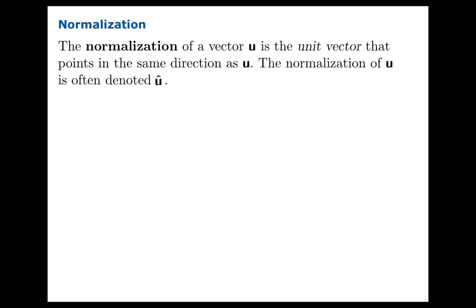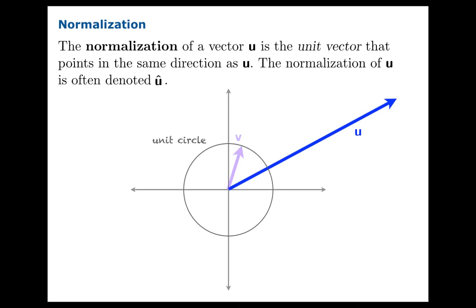Yet another definition. Normalization. The normalization of a vector is the unit vector that points in the same direction as u. And we often use the symbol u hat to denote the normalization. Let's take a look at some vectors in the plane, and then their normalizations.